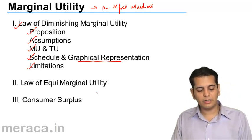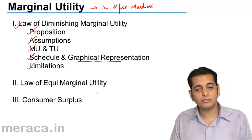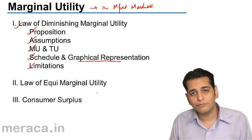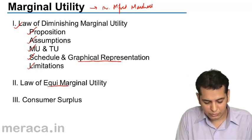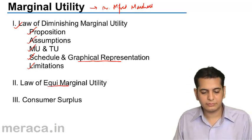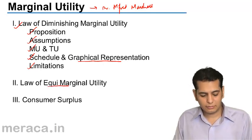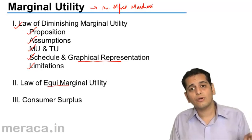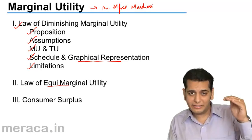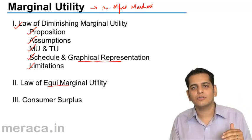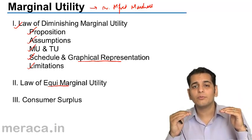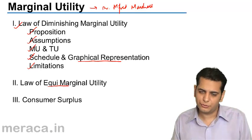In the second part, we understand what is the law of equi-marginal utility. The first law was about diminishing marginal utility and the second law is about equi-marginal utility.